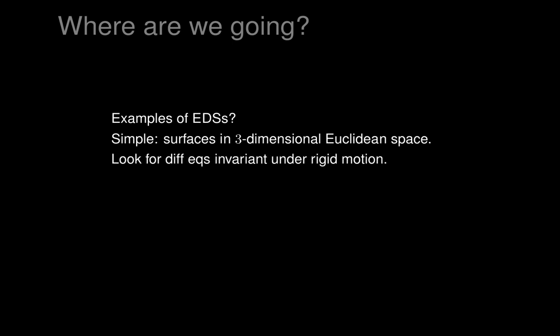In particular, we will look for differential equations for those surfaces which are invariant under rigid motion of three-dimensional Euclidean space, so that they really represent geometric features of those surfaces. Rigid motion means isometry — that is, distance-preserving maps under the usual Euclidean metric of three-dimensional Euclidean space.